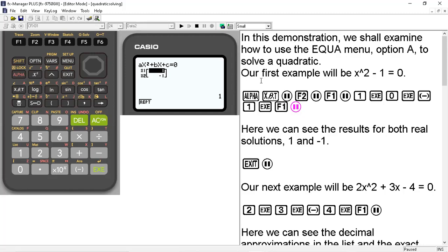So let's go ahead and exit out of here. When I hit the exit button again, I get brought back to the coefficient screen. Our next example is going to be 2x² + 3x - 4 = 0. So we'll go ahead and type in 2 and then exe, and then 3 and then exe, and -4 and exe. And then we'll hit F1 again for solve.